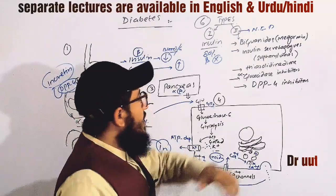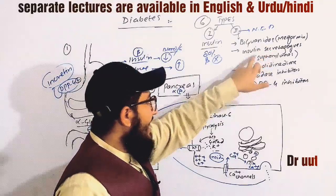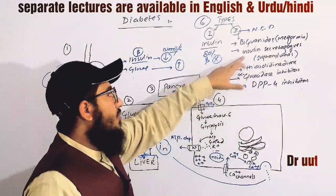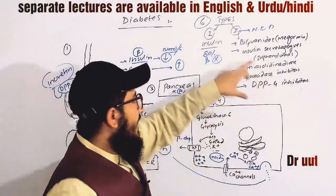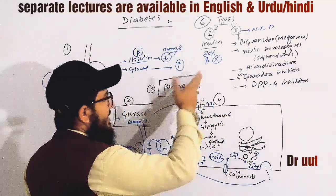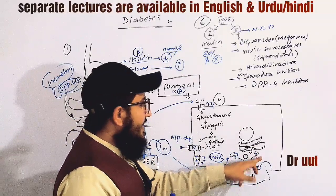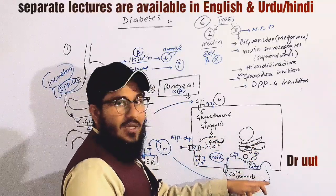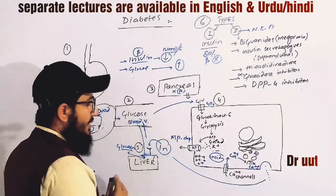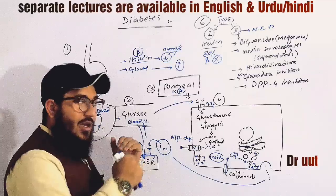Another class is called insulin secretagogues, or sulfonylureas. Drugs in this class include glimepiride, glipizide, and glyburide. The mechanism of action of sulfonylureas is that they activate the remaining beta cells — the 20% that are still present — stimulating the release of insulin from those beta cells. When insulin concentration becomes high enough, there are chances that this insulin will find active receptors, activate them, and bring glucose from blood vessels to the tissues, maintaining blood glucose levels.